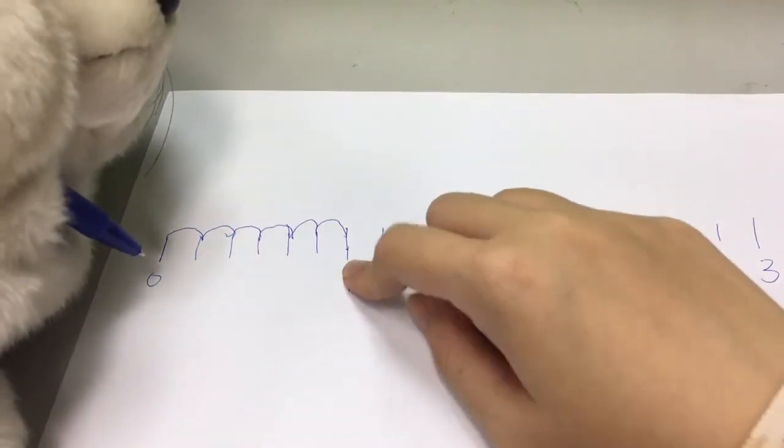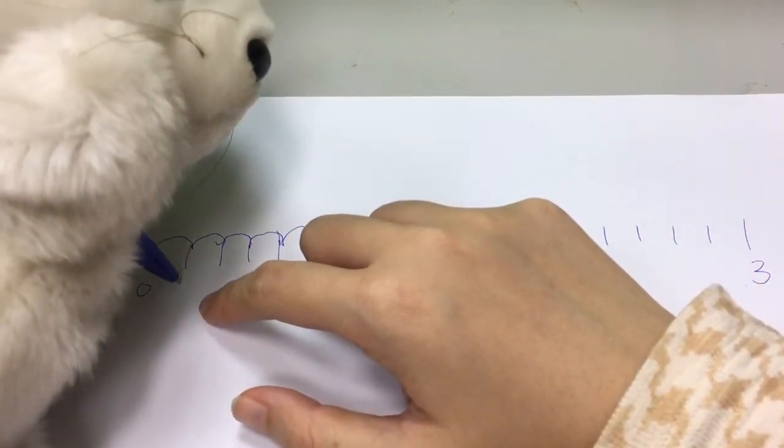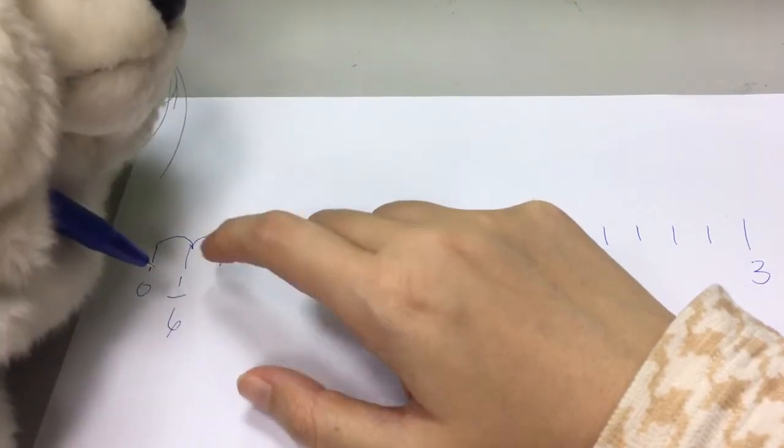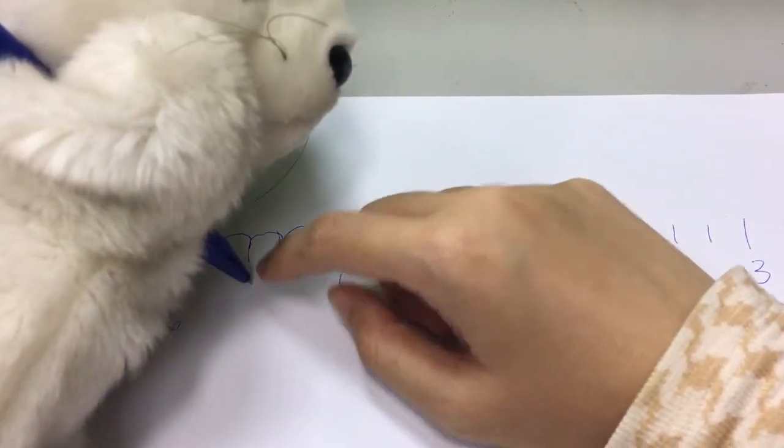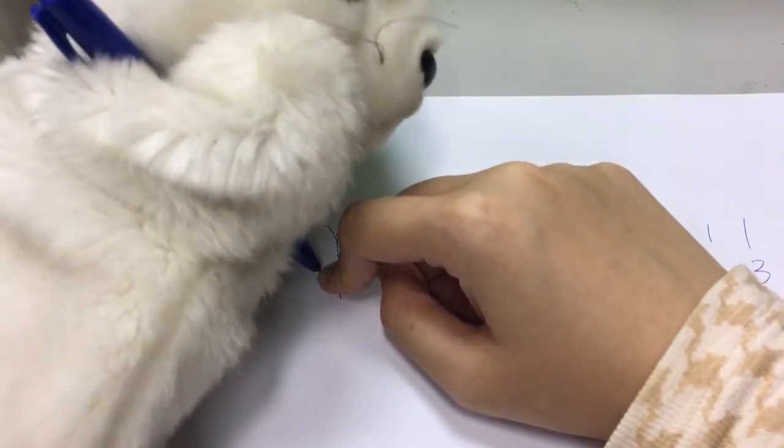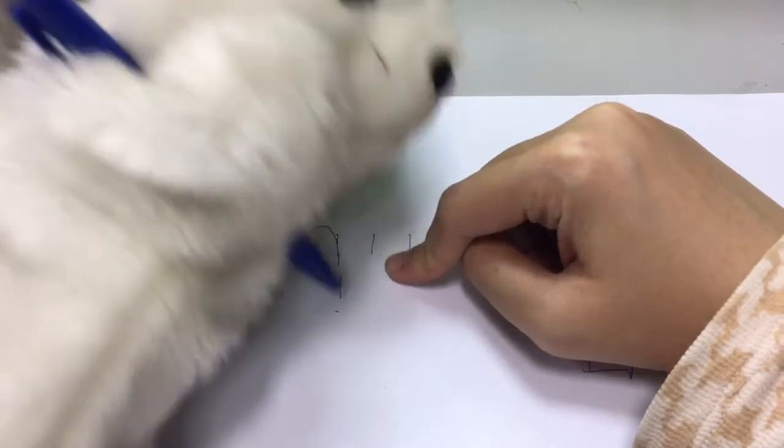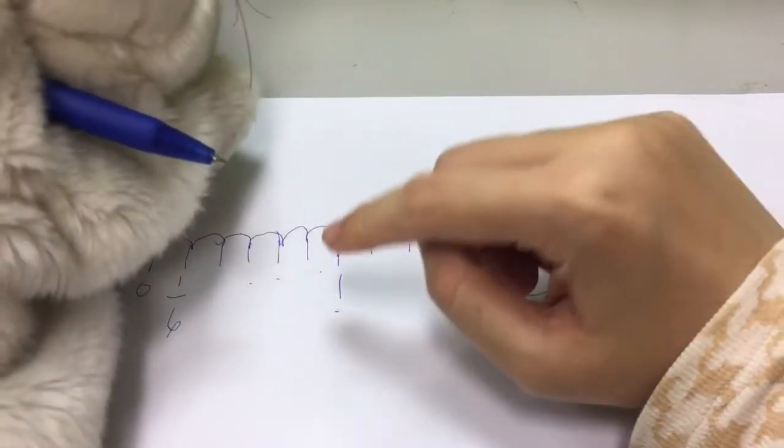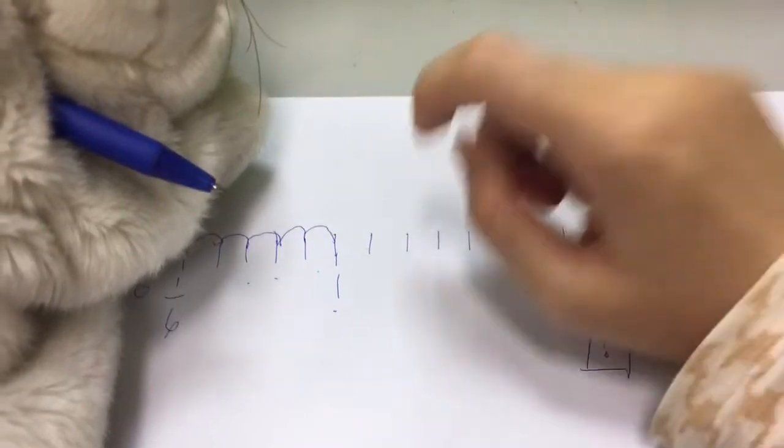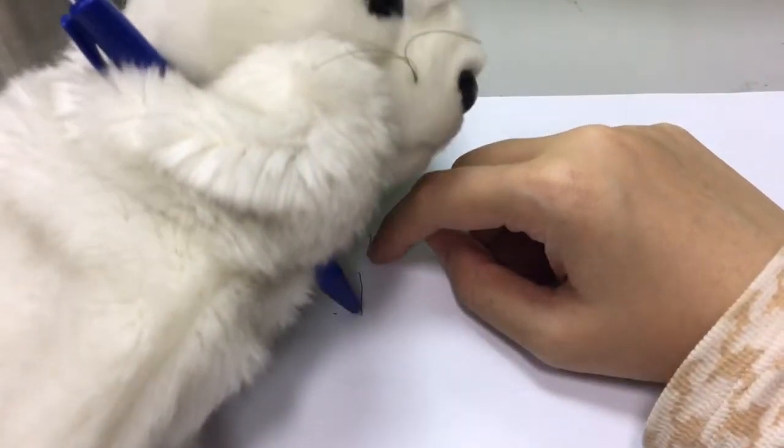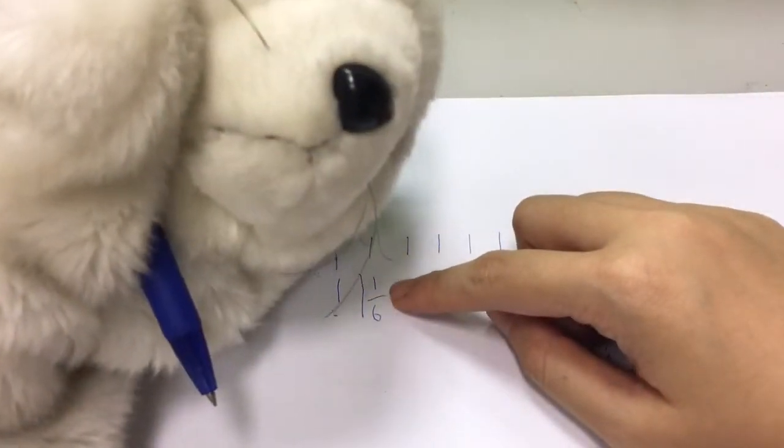So one whole divided by six parts will give you one out of six, so this would be 1/6. One whole and then this 1/6 after one whole is one whole and 1/6, right there.